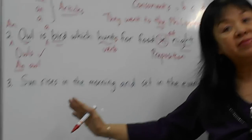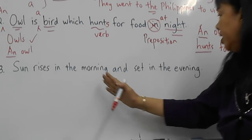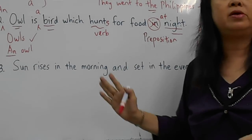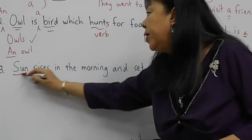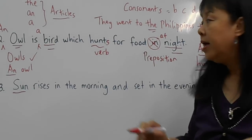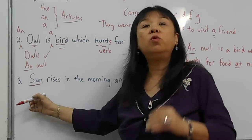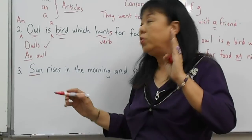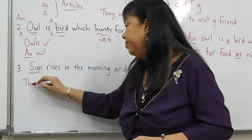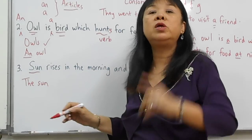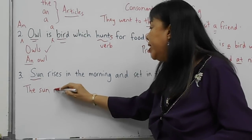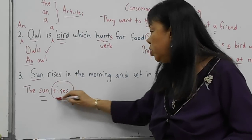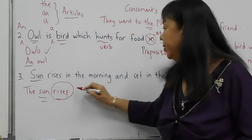The last sentence is: 'Sun rises in the morning and sets in the evening.' This sentence is also grammatically wrong. You do not start with just 'sun,' because there is only one sun in the world — there is only one of this kind. Therefore we should say 'the sun,' and 'rises' is correct because we are talking about one sun, so the verb has an 's.'